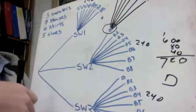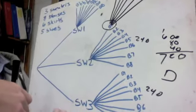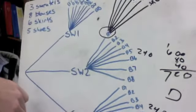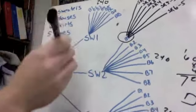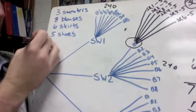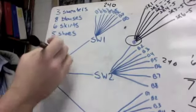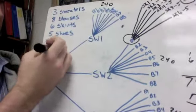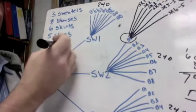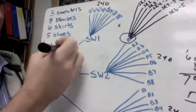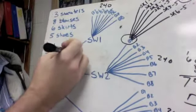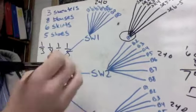Probably a more efficient way to do this one is using our compounds and our fractions that we've talked about. So I'll go up here, sweaters, you're going to select 1 out of 3 sweaters. You're going to select 1 out of 8 blouses. You're going to select 1 out of 6 skirts. And you're going to select 1 out of 5 pairs of shoes.